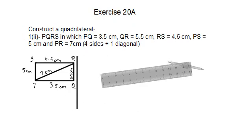So, over here what have we got — let's have a look. It says construct a quadrilateral PQRS in which PQ is equal to 3.5 centimeters, QR is equal to 5.5 centimeters, RS is equal to 4.5 centimeters, PS is equal to 5 centimeters, and PR is equal to 7 centimeters. PR is the diagonal and all the other measurements are your sides — so again 4 sides plus 1 diagonal question.